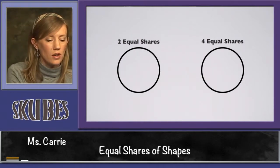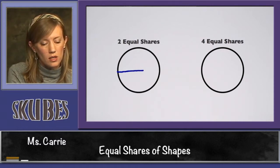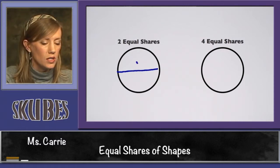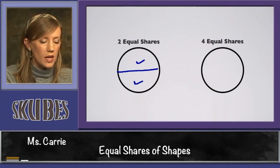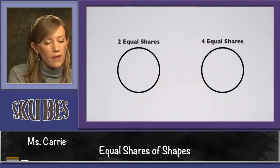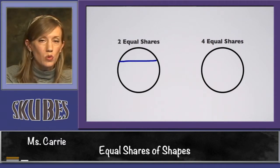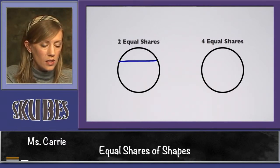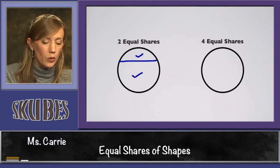We could also cut the circle across, and that also gives us two equal shares — this side and this side are the same. Now, if I divided it like this across, these would not be equal. This is a small part and this is a much bigger part. Those are not equal.